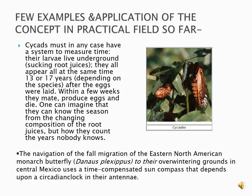A few examples and applications of the concept in practical cases. Periodical cicadas have a system to measure time — their larvae live underground sucking root juices. They all emerge at the same time, 13 or 17 years depending on the species. After the eggs hatch, within a few weeks they mate, produce eggs and die. One can imagine that they sense the season from the changing composition of root juices, but how they count the years, nobody knows.